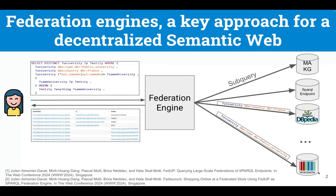As usual when making a query, the user does not care where the data is located. The federation engine provides the illusion of a single unified virtual graph to the user, even though the data may be distributed across multiple endpoints and knowledge graphs. This is great because the user can query many knowledge graphs with just one federation engine.